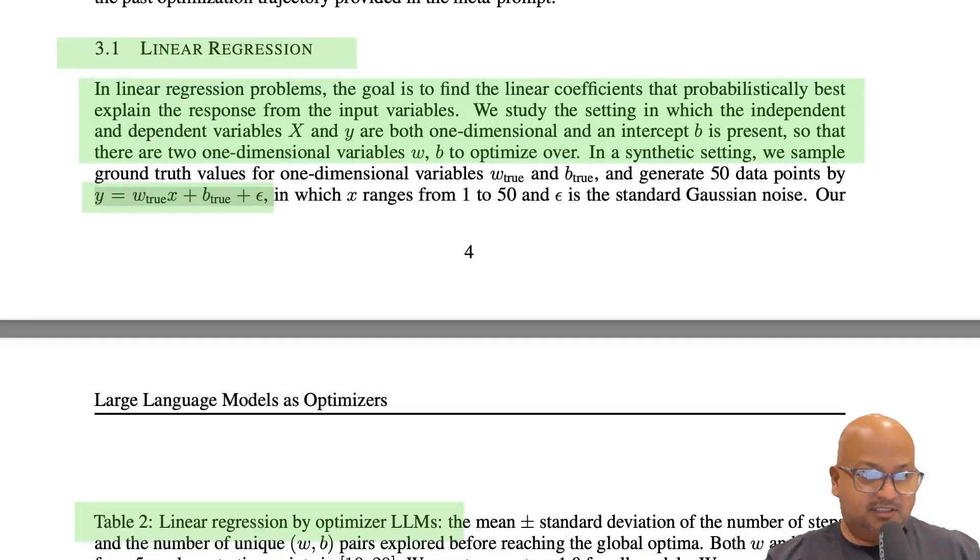Let's look at how they set up the problem for linear regression. The goal is given a set of points to find a line that minimizes the error or best fits those points. And to do that, you want to find these two values, W and B, which correspond to the slope and the intercept of the line that you're trying to find through those points.